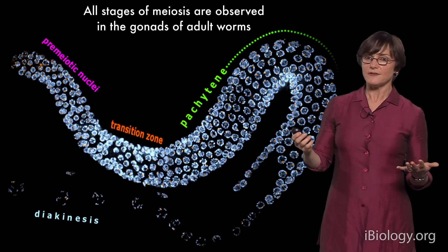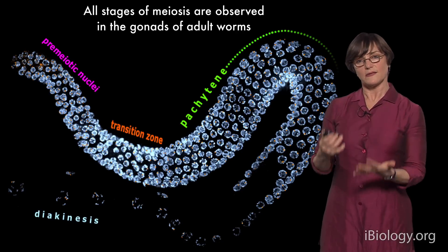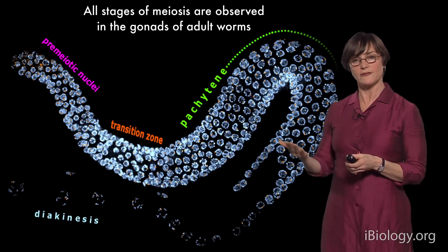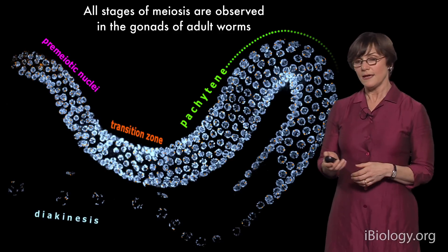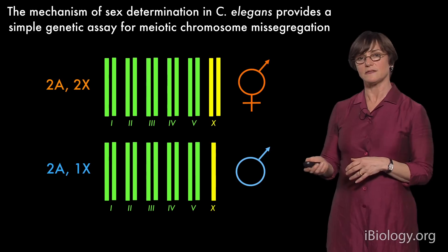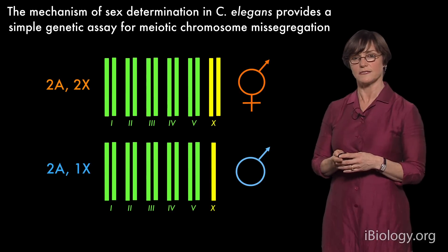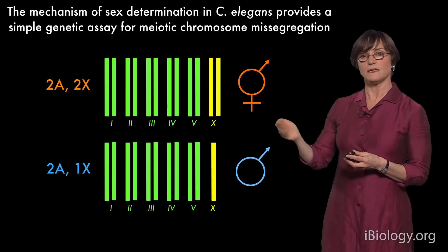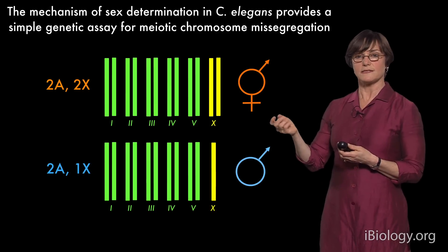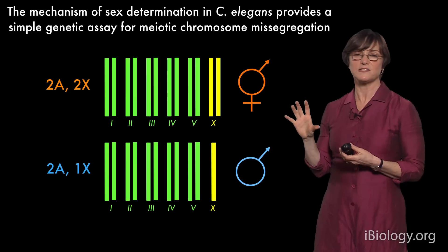One way we identify the specific molecular components driving this process is through genetics, which is relatively easy in C. elegans partly because of its mechanism of sex determination. In a wild population of C. elegans, most animals are hermaphrodites with six pairs of chromosomes — a really nice small number. Humans have 23 pairs, which is a lot more to contend with. With six pairs it's quite easy to visualize each chromosome individually in the nucleus.